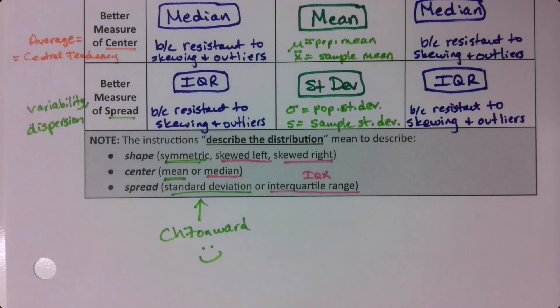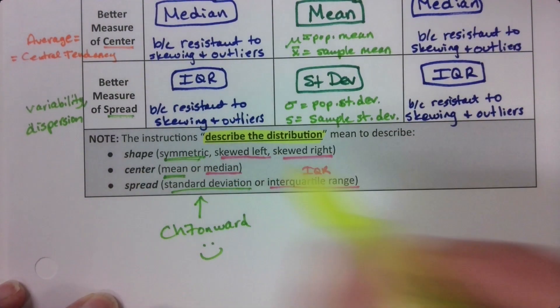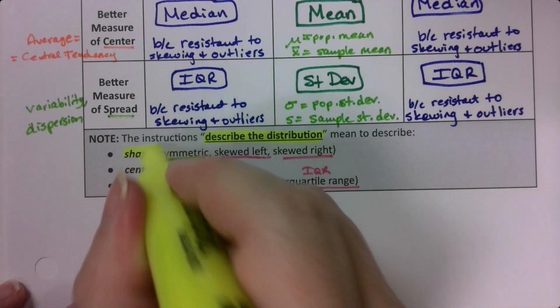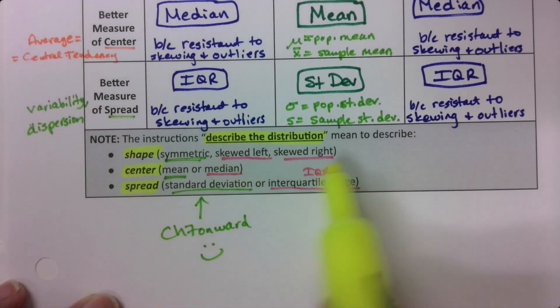But also, don't forget that when the instructions in the notes or the worksheets say to describe the distribution, what you're looking for is shape, center, spread. What's the shape? Is it symmetric, skewed left, skewed right?